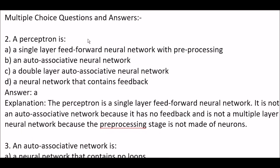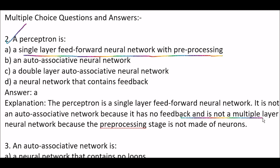Your first question is: a perceptron is — Option A: a single layer feed forward neural network with preprocessing. Option B: an auto-associative neural network. Option C: a two layer auto-associative neural network. Option D: a neural network that contains feedback. The right answer is option A. A perceptron is a single layer feed forward neural network with preprocessing, because it's not an auto-associative network, it has no feedback, it's not a multiple layer neural network, and the preprocessing stage is not made of neurons.